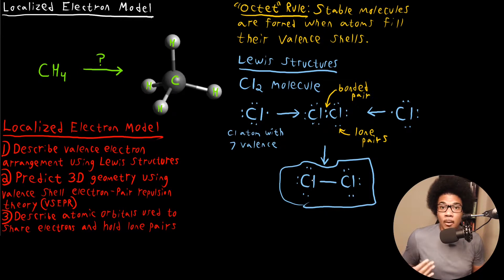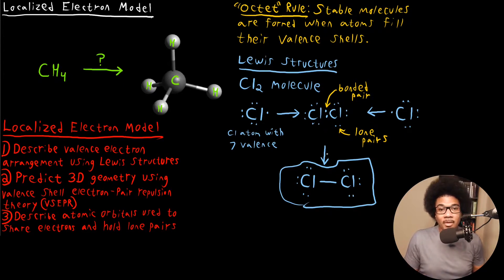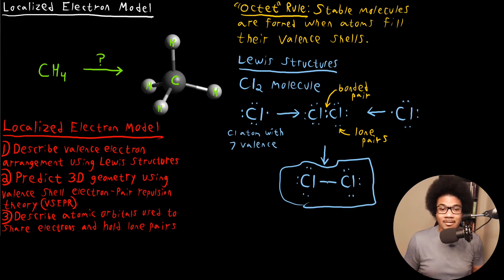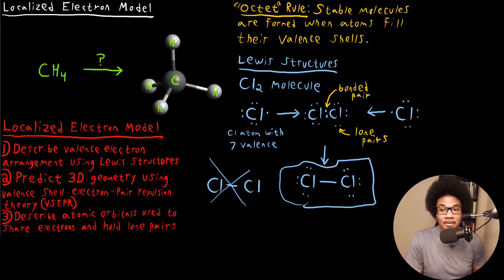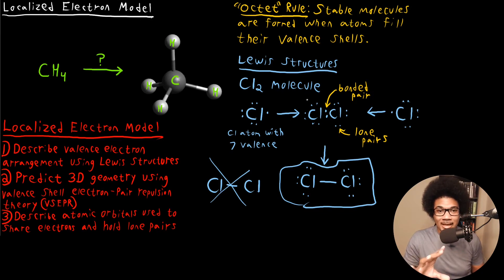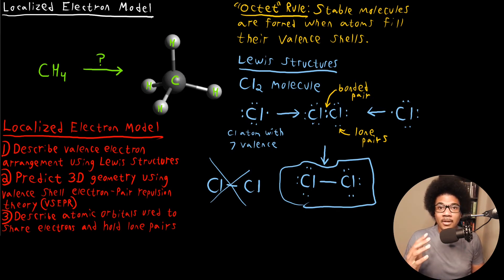Diatomics are easy — that's why I started with this as the first example. It's going to get more complicated, but this is the basics. A proper Lewis structure shows where the bonded pairs are via dashes and the lone pairs via dots. If I were to draw Cl2 with just the two atoms and say that's the full Lewis structure, it is not — you must include the dashes and the lone pairs. That's an introduction to the localized electron model and a first easy example of Lewis structures. In the next few videos, we'll go through more involved examples and problem-solving strategies for drawing Lewis structures for any molecule.